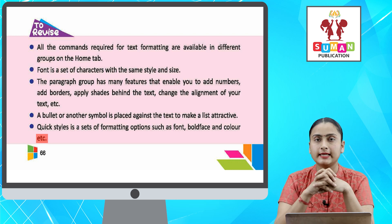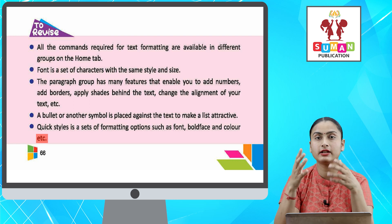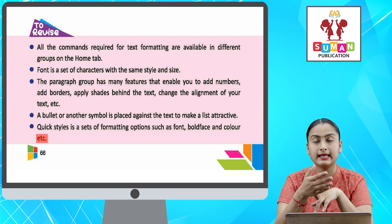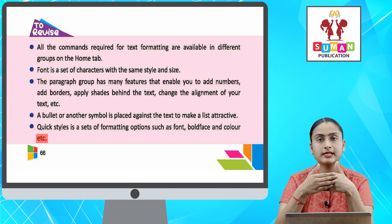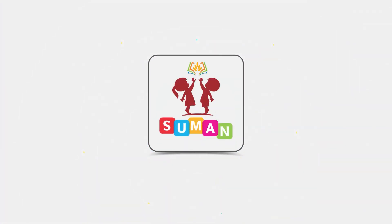So your Home tab has different types of commands in your Home group which help you to make your text attractive. Basically, you have to format your text — in which you can change the style of text, highlight the text, add different types of bulleting and numbering — so that your text is more attractive. So students, with this we come to the end of this chapter. All the exercises you have to do yourself. Thank you very much for watching.